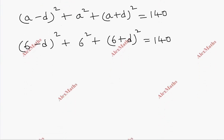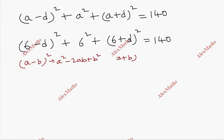To expand, recall the identities: (a - b)² = a² - 2ab + b², and (a + b)² = a² + 2ab + b².